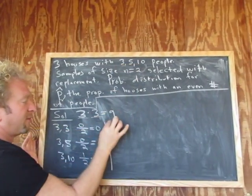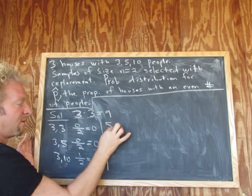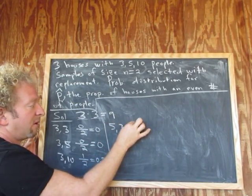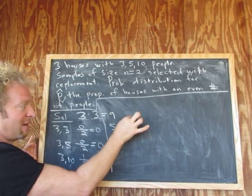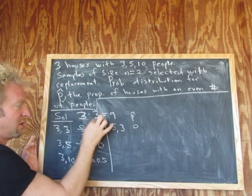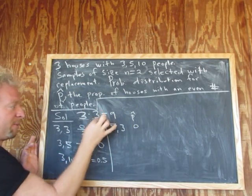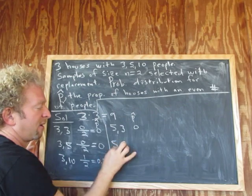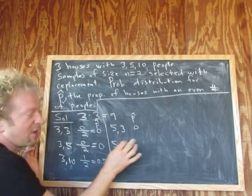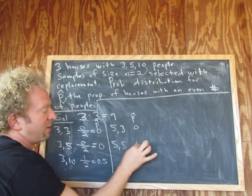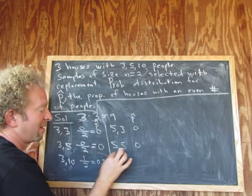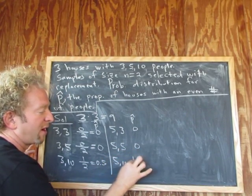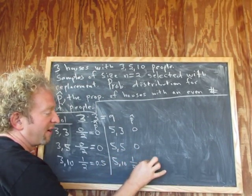Now we'll do five and three — again, zero even numbers, so p-hat equals zero. Five and five: again, zero even numbers out of two numbers, so p-hat equals zero. Five and ten: one even number out of two numbers, so p-hat equals 0.5.